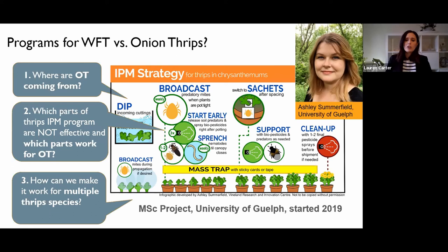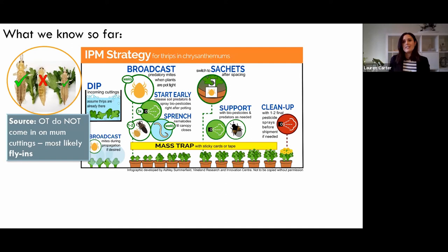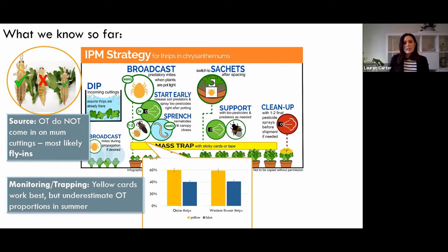She just started in 2019, so we don't have all the answers, but we do know some things. In terms of where they come from, we know for sure that onion thrips do not come in on mum cuttings. So they're most likely flying in from outside. We determined this by washing cuttings from a whole bunch of different suppliers across the country and also putting up sticky cards inside and outside the greenhouse for a full year.